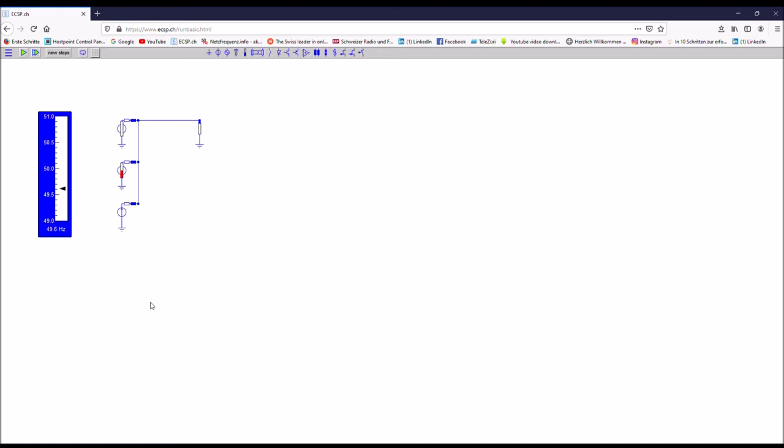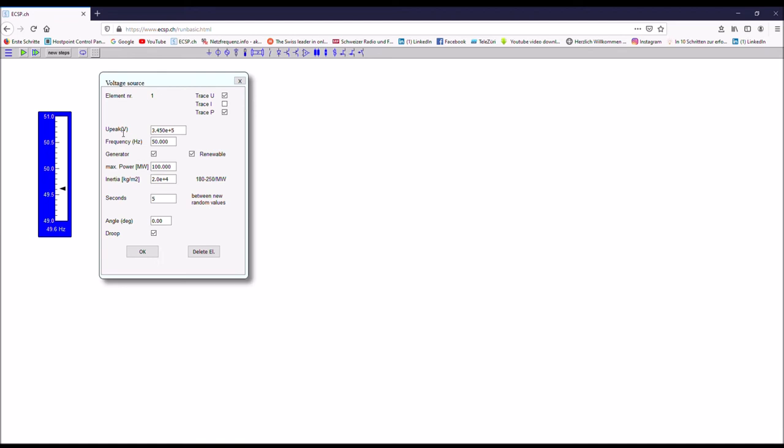In the attached example, there is a circuit with a load and three different sources. One source is conventional, for example a diesel set, which should be used as little as possible. Then you have a renewable source, for example a windmill, which is intermittent, and then you have storage. By the way, to change the different type of sources, you go there and you can choose if it's a generator, a renewable, or a storage. Here, for example, there is a storage where the renewable is unchecked and then you get the opportunity to check the storage.